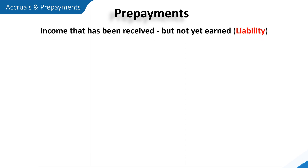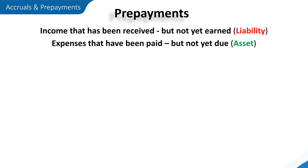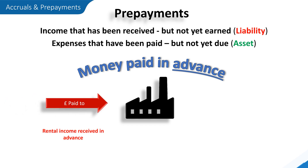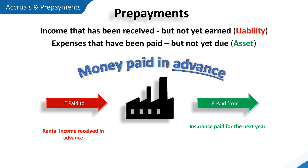Now let's look at prepayments. As with accruals, prepayments can also be one of two things: income that has been received but not yet earned, which is recognised as a liability; or expenses that have been paid but are not yet due, which is recognised as an asset. Either way, prepayments are money paid in advance — whether that's money paid to a business, such as rental income received in advance, money paid from the business such as insurance paid in advance for the next year, or perhaps broadband payments covering the next three months.